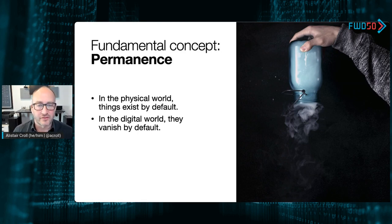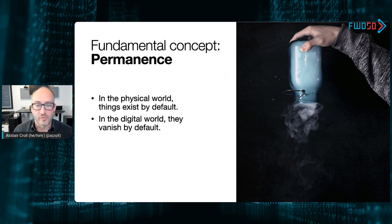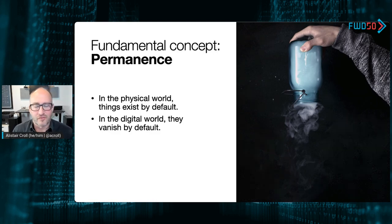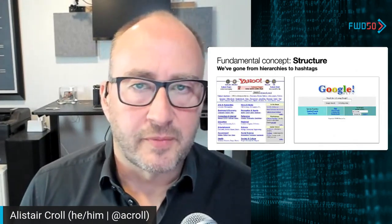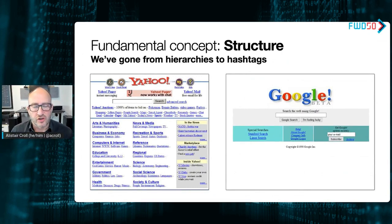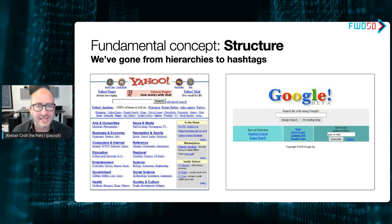In the physical world, things exist by default — matter is permanent, unique, hard to change, and expensive to copy. It's permanent unless we destroy it. Information, on the other hand, is ephemeral, copyable, and fungible — it vanishes unless we actively maintain it. This has consequences for truth: if I can put fakery out there and make a thousand versions of something versus the one true provable version, I have issues of veracity. There's also an important concept about hierarchy and structure versus hashtags and search.